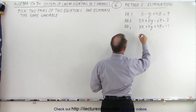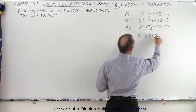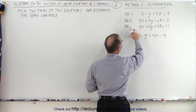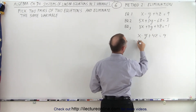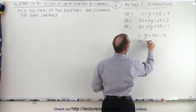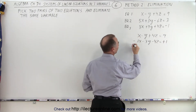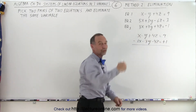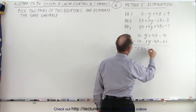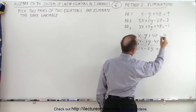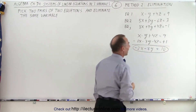We take x minus y plus 4z equals 9, and then we multiply this equation, both sides, by negative 1. That gives us minus 3x minus 7y minus 4z equals positive 1. When we add those together, the z's drop out. That gives us minus 2x minus 8y equals 10. And there's our first equation without the variable z.